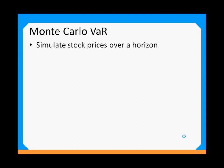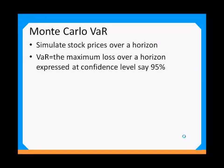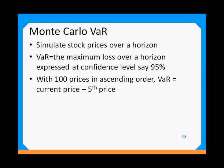So what is the Monte Carlo value at risk? The Monte Carlo value at risk basically enables us to simulate stock prices over a horizon — the horizon may be a year, half a year, or any other period — and measure the value at risk. The value at risk is simply the maximum loss that you can incur over a horizon, expressed at a confidence level, say 95% or 99%. Using the Monte Carlo method, if you simulate a hundred prices and arrange them in ascending order, the value at risk would be the current price minus the fifth price.